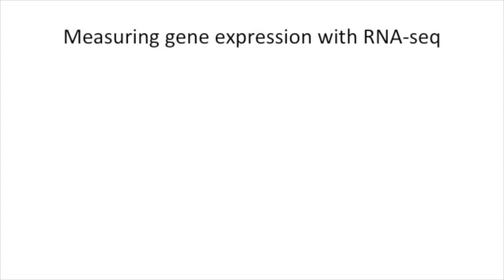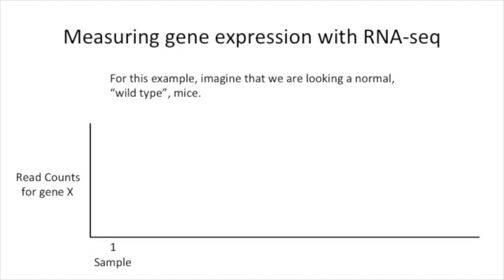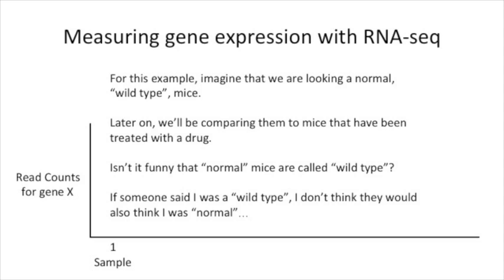Let's start with an example of measuring gene expression using RNA sequencing. Here we're going to plot the measurements, or the read counts, for a gene called GeneX, which is an imaginary gene, on a graph with the y-axis being gene counts and the x-axis being the samples. For this example, imagine that we are looking at normal, wild-type mice. Later on, we'll be comparing them to mice that have been treated with a drug. Isn't it funny that normal mice are called wild-type?